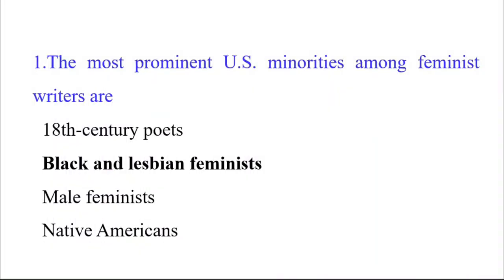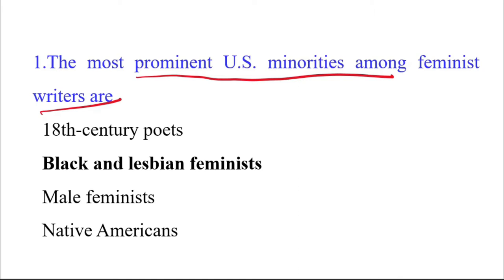Let's begin our journey to revise all the things we studied in the previous lectures. The first lecture deals with 20 important questions. The first question is: who were the most prominent U.S. feminists? Among feminist critics, the most important U.S. feminists had devoted themselves to the theory of black feminism and lesbian feminism. So the answer is black and lesbian feminists who belonged to U.S. minorities among feminist writers.